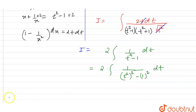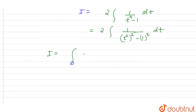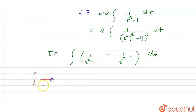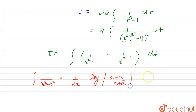Using partial fractions, we can write this term as 1 upon t squared minus 1, minus 1 upon t squared plus 1. It will be written exactly the same with respect to dt. The integration of 1 upon x squared minus a squared is 1 by 2a, log of modulus of x minus a upon x plus a, plus c.